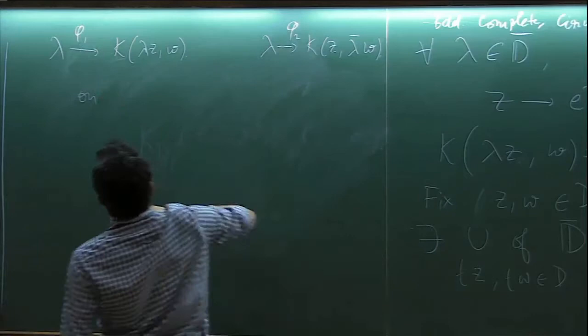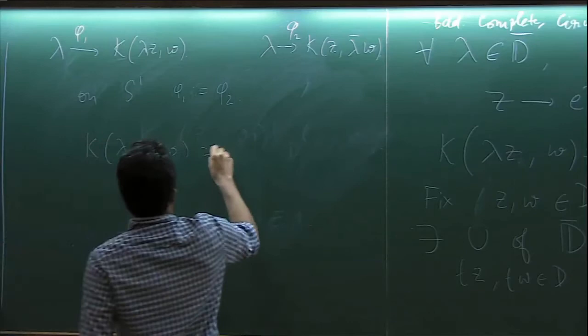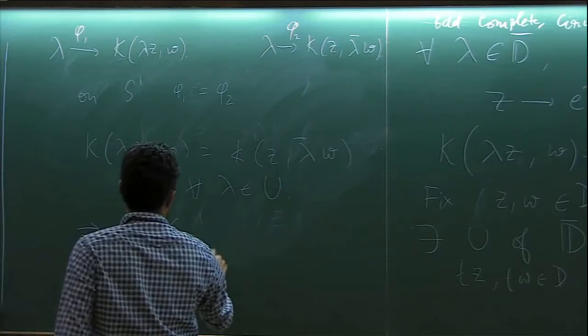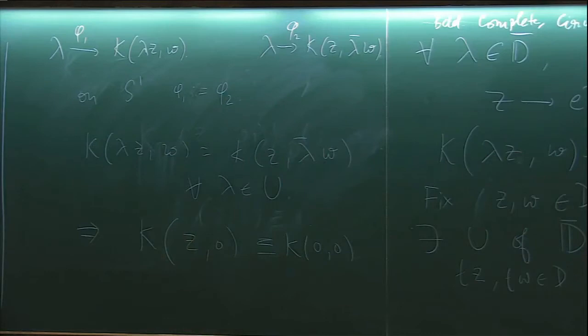And then we look at this particular map. One is lambda going to k of lambda z and w. And the other one is lambda going to k of z lambda bar w. So the Bergman kernel is conjugate holomorphic in the second variable along with the holomorphic here. Both turn out to be holomorphic maps. And on S1, so let's call it something phi 1 and phi 2. On S1 phi 1 is equal to phi 2.